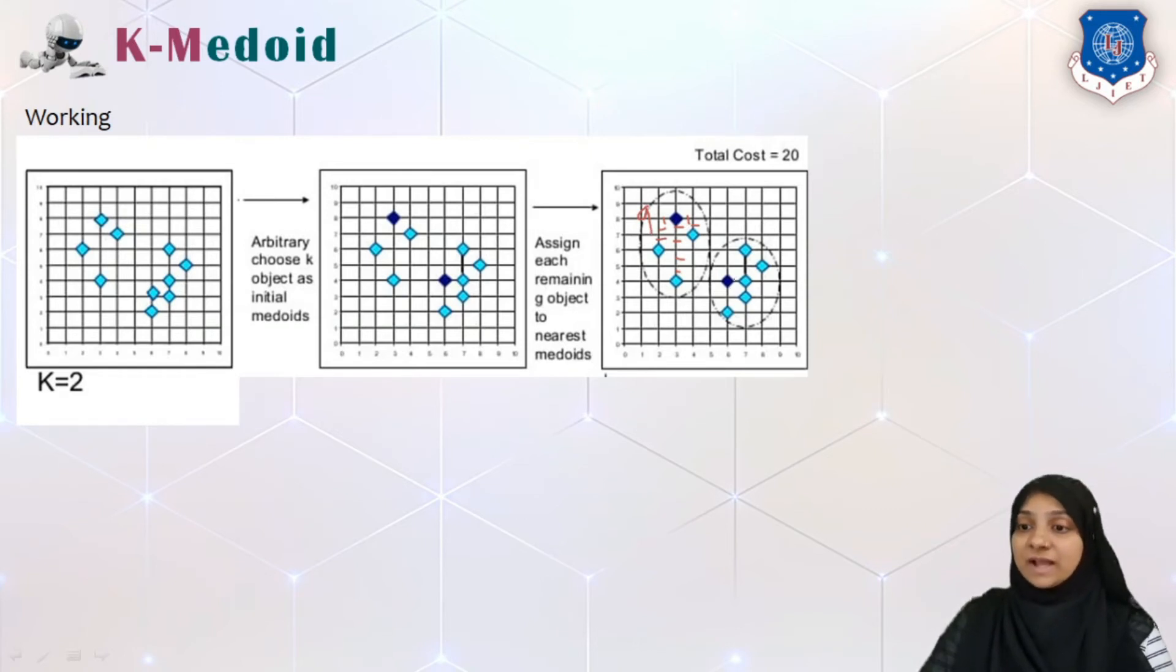For another cluster, we will calculate cost as for this particular point it will be one and two. This particular point it will be one. This will be one and two, so this total is five. Now one, two, three, that is five plus three is eight, and for this one, two and three that is equal to eleven. So eleven is the cost of another cluster. So ultimate cost of this particular clustering algorithm at this stage is equal to twenty.